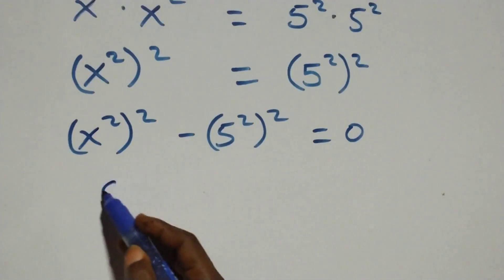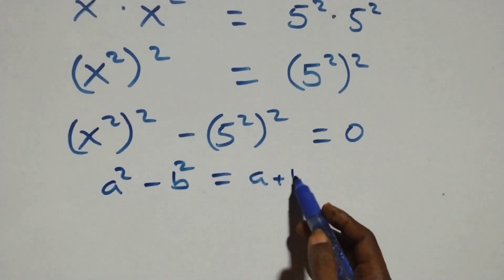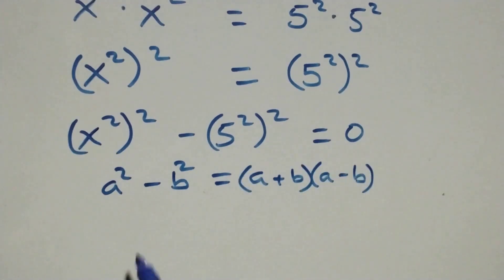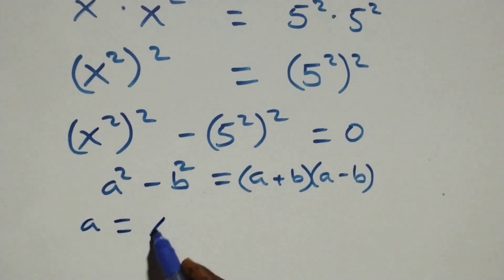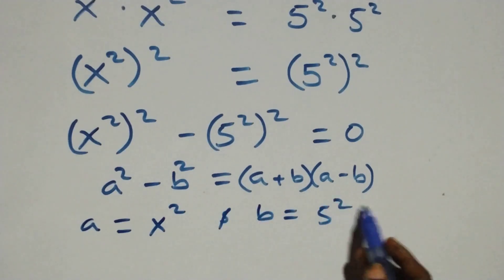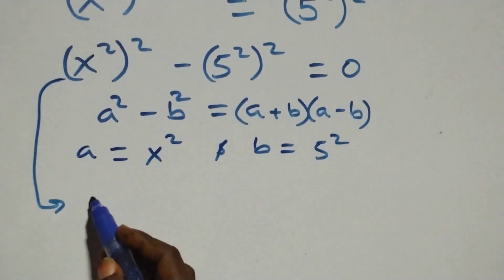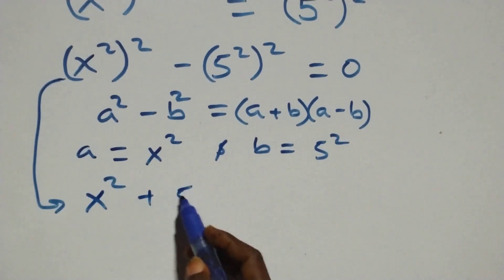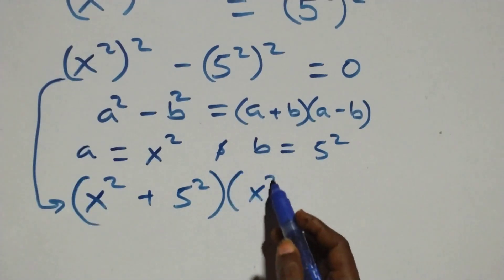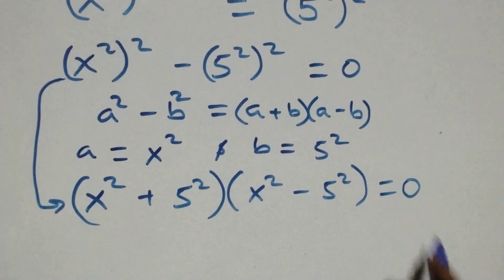Then this follows: we have a squared minus b squared, which factors as (a plus b) times (a minus b). Here a stands as x squared and b stands as 5 squared. So all we have becomes (x squared plus 5 squared) times (x squared minus 5 squared) equals to 0.